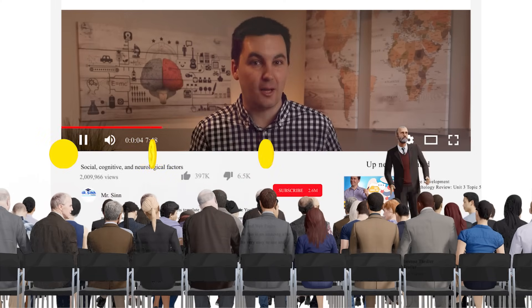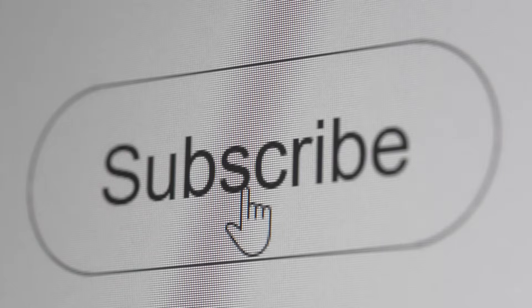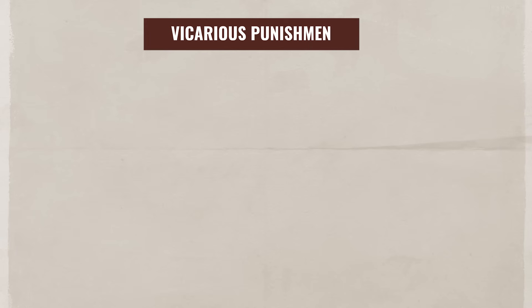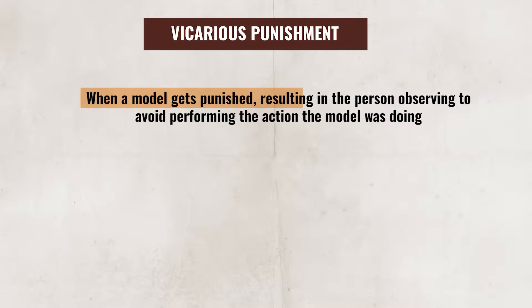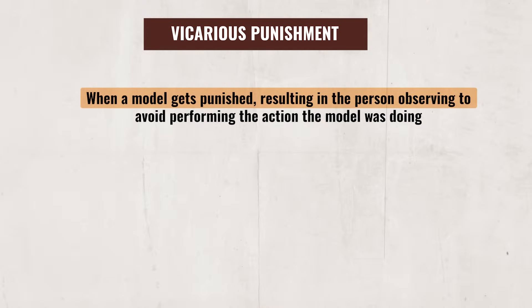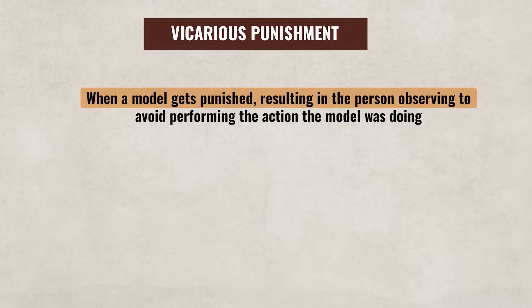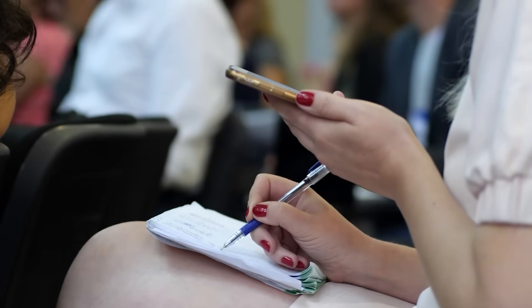Vicarious reinforcement occurs when an individual sees a model receive a reward, which ends up motivating the individual observing to try the same behavior, since they will expect the same reward. For instance, if your teacher gave everyone extra credit who subscribed to the Mr. Sin channel, you would be more likely to subscribe expecting extra credit. On the other hand, vicarious punishment occurs when a model gets punished, resulting in the person observing avoiding that action — for example, if your friend is texting in class and the teacher calls them out and forces them to read their texts aloud, resulting in you thinking twice before texting in class. This type of learning can help individuals learn new skills.